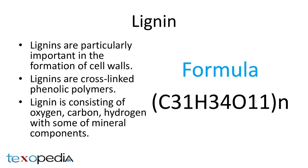What is lignin? Lignin is a class of complex organic polymer that forms key structural material in the support tissues of vascular plants and some algae. Lignin is particularly important in the formation of cell walls, especially in wood and bark, because they lend rigidity and do not rot easily. Chemically, lignins are cross-linked phenolic polymers, consisting of oxygen, carbon, hydrogen and some mineral components.